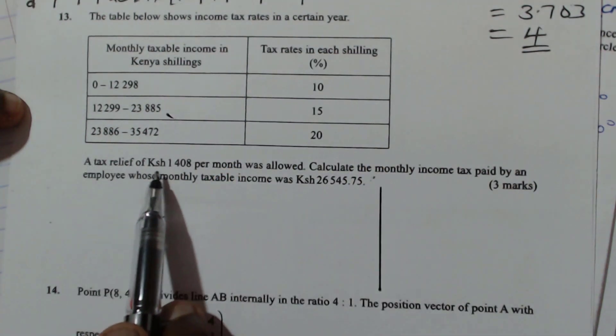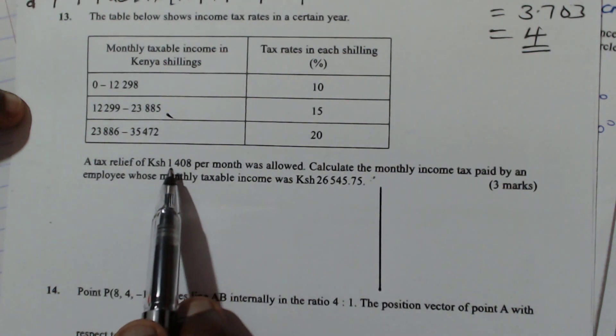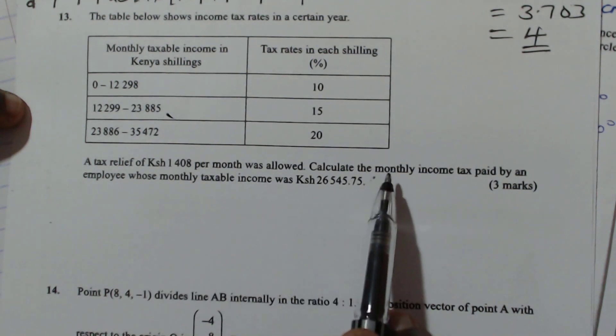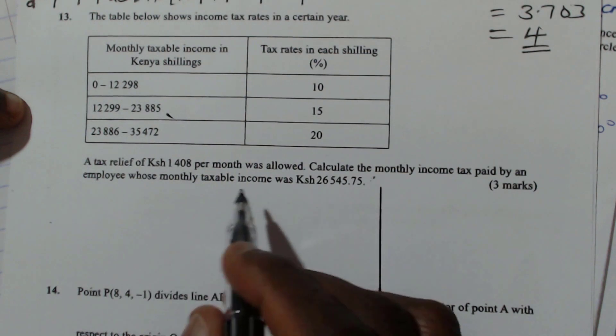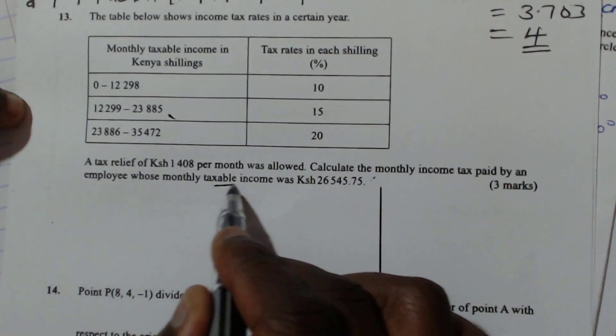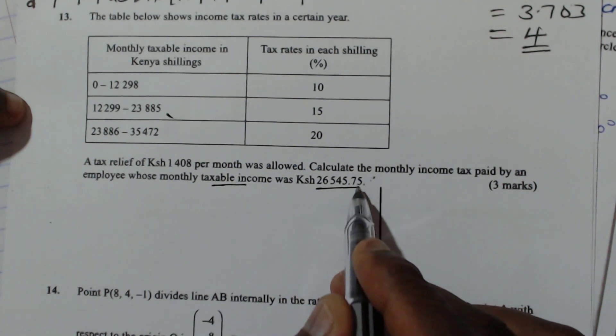A tax relief of 1408, that is 1408 shillings per month was allowed. Calculate the monthly income tax paid by the employee whose monthly taxable income was 26545.75 cents.